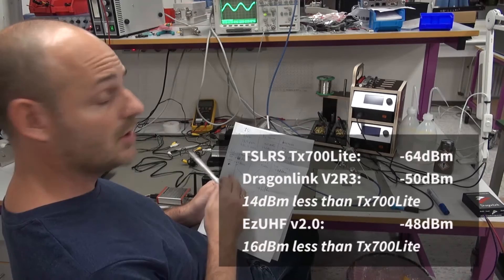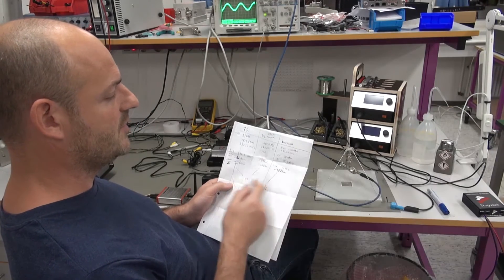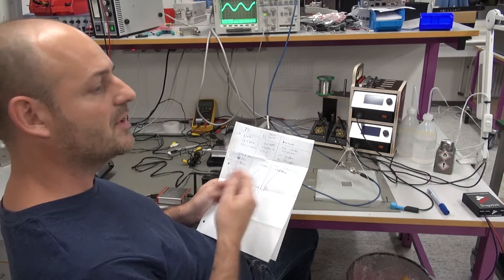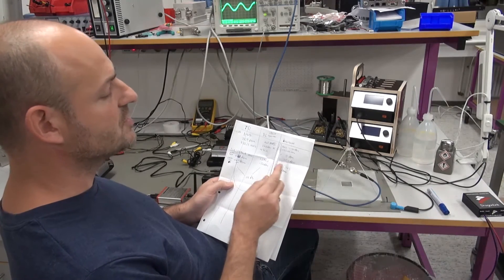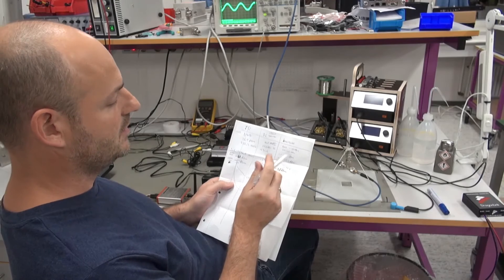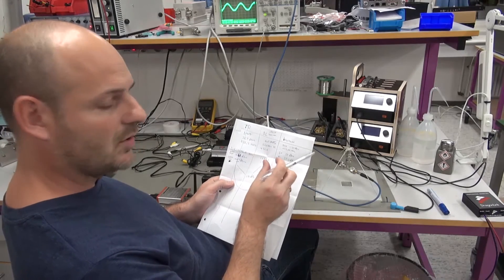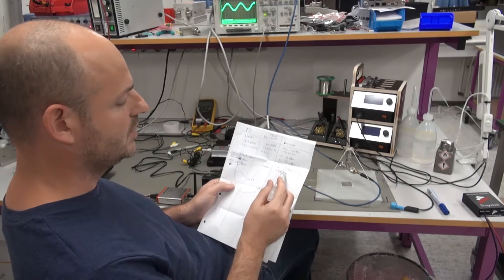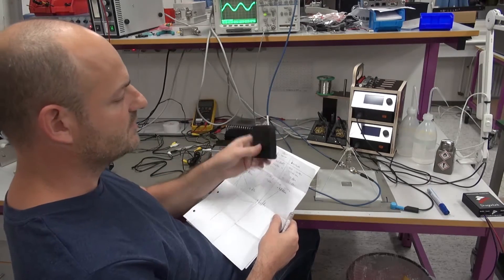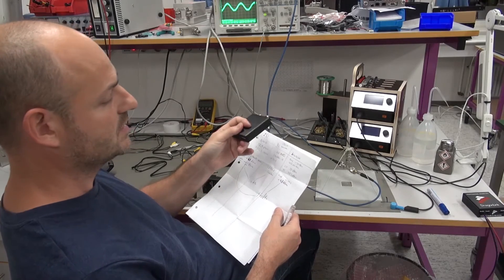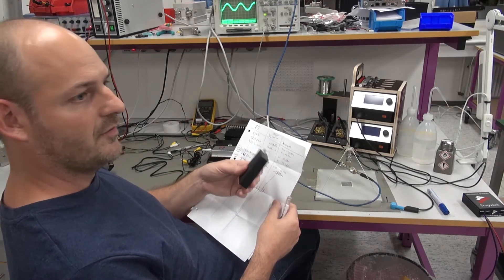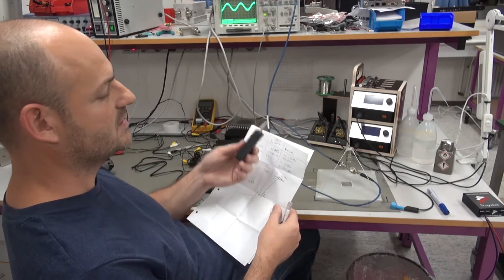However, since the three systems use a lot of different frequencies both in the way they hop and the frequencies they have used to hop, they will affect the harmonics differently. The Immersion system uses only a very narrow band in the UHF band. A very narrow frequency band will also affect a very narrow band in the third harmonic. Since none of the different video receiver frequencies actually hit the third harmonics of the Immersion system, it looks like it has less harmonics. However, it has the worst harmonics but it doesn't affect your video receivers.